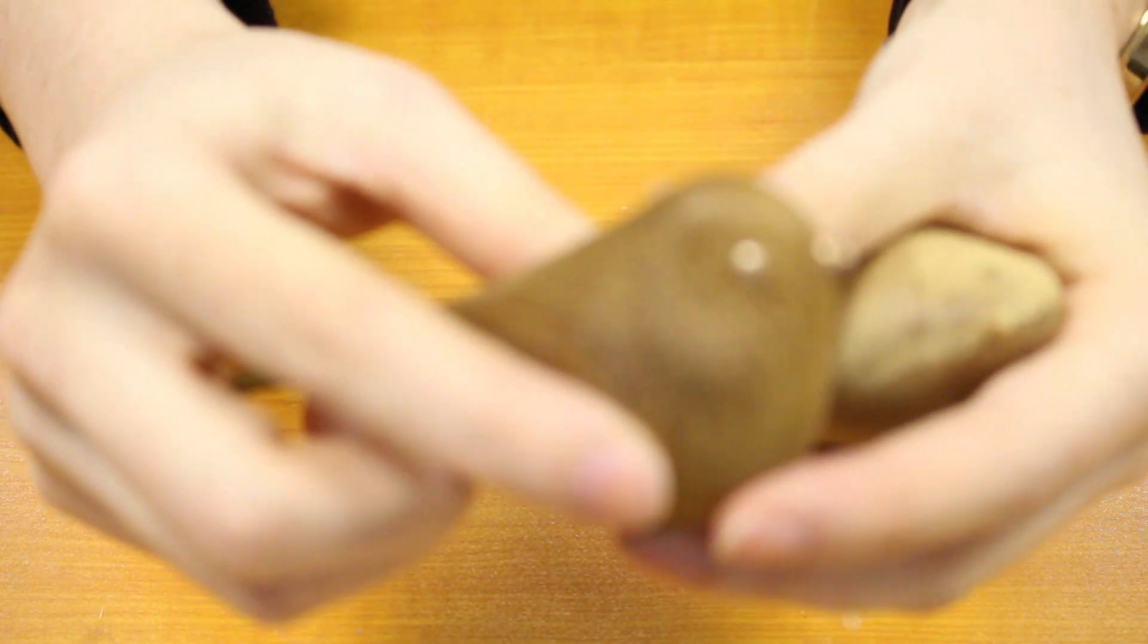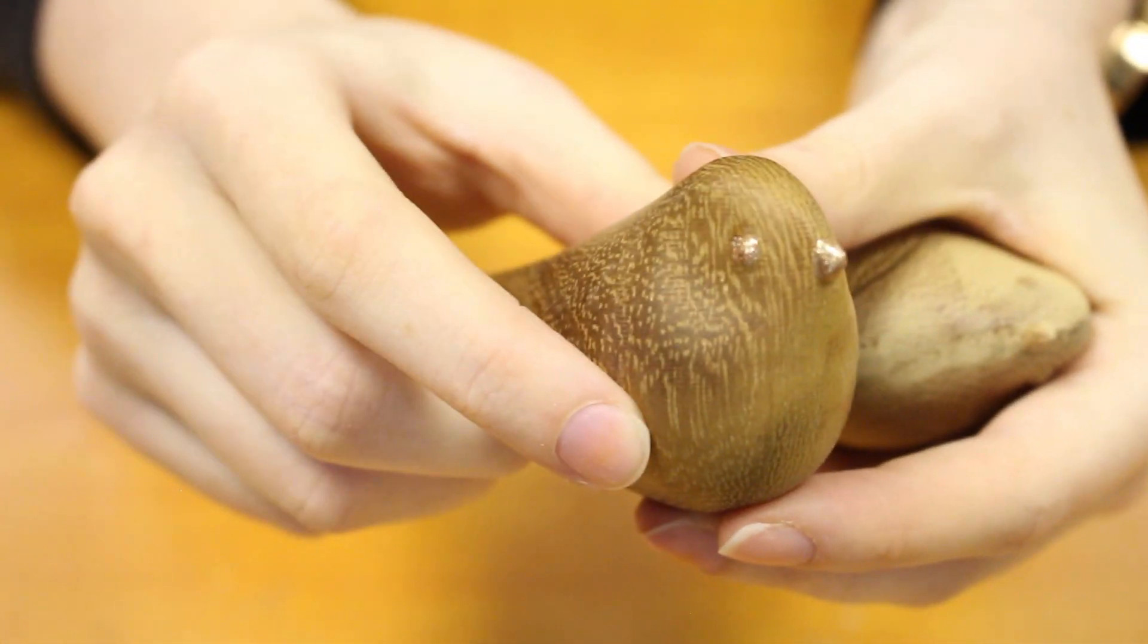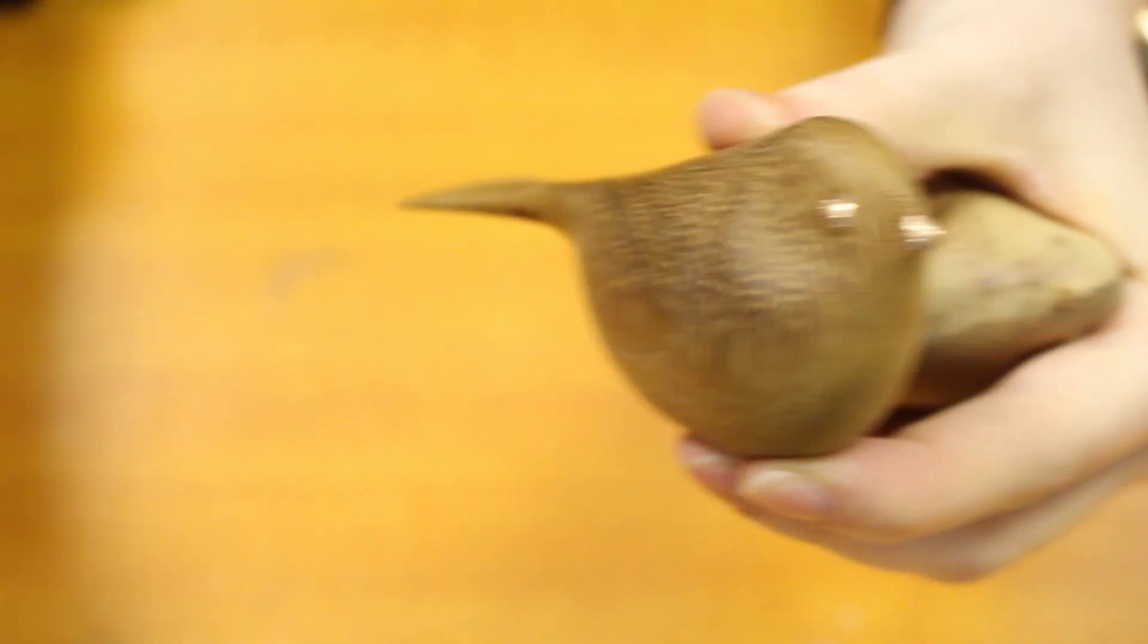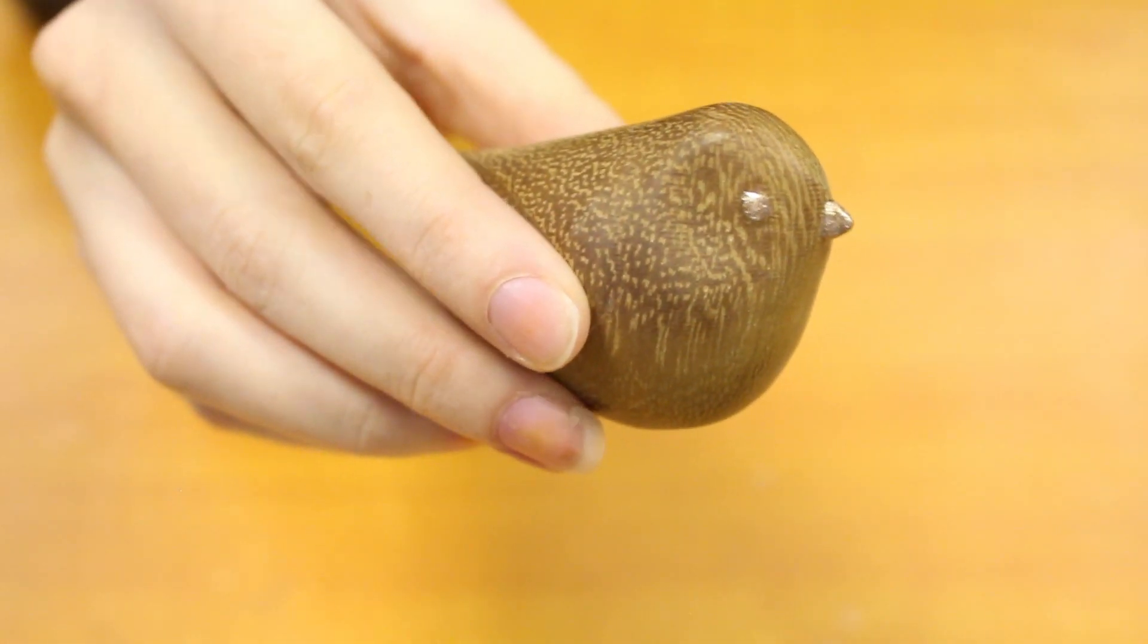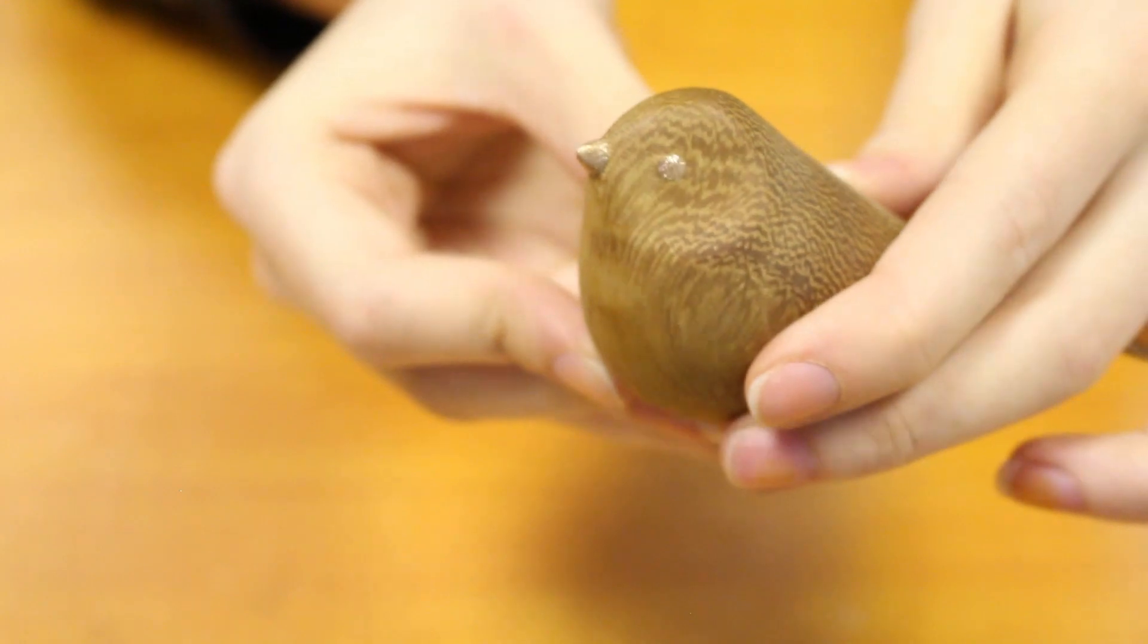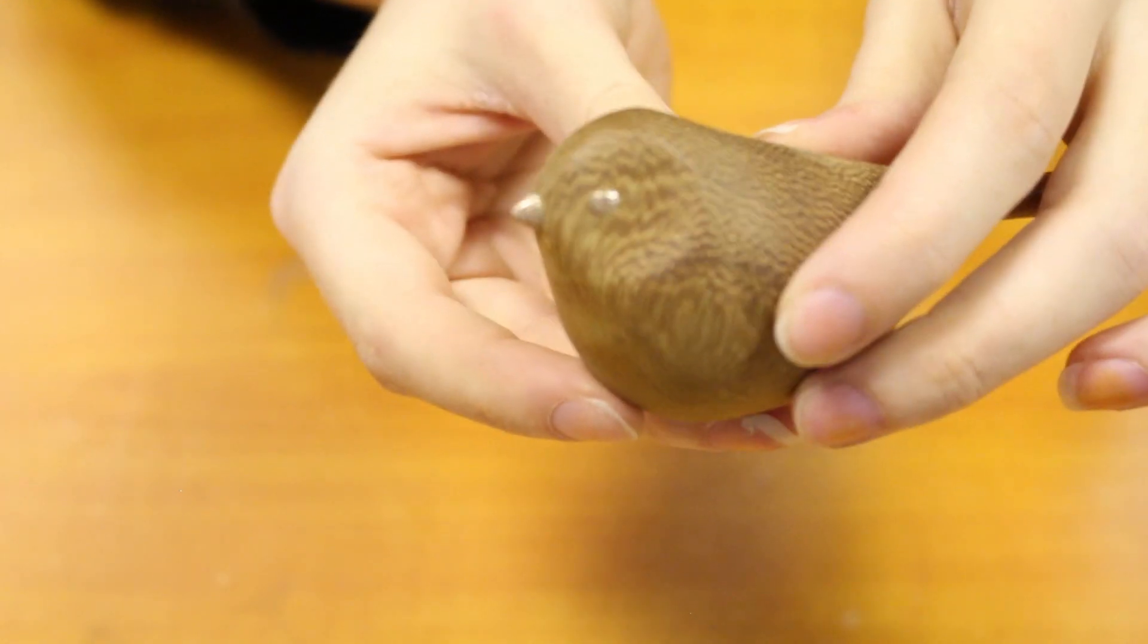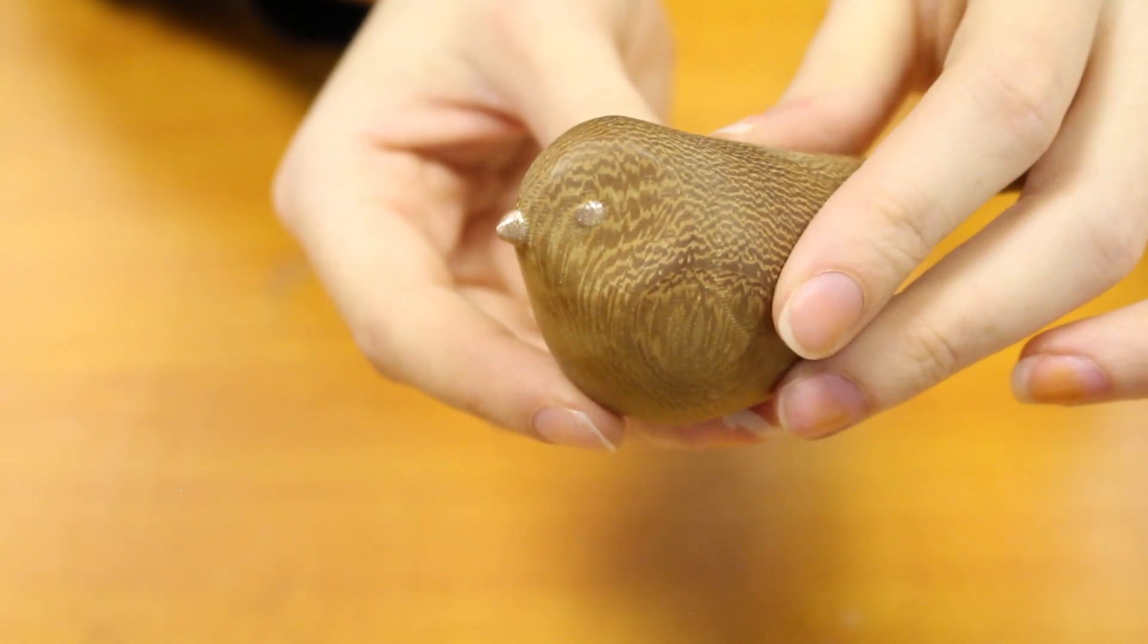And the final thing I did was to use a little bit of nail polish. So actually this stuff here, gold nail polish, on the eyes and the beak. Because I thought that really just brought out those details and just made it look a little bit more fancy. So that's it.